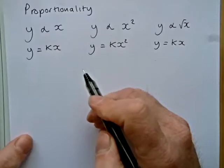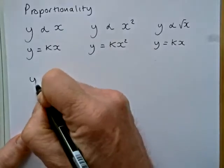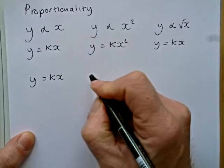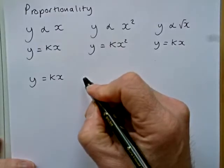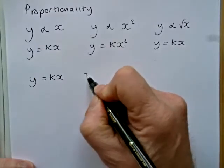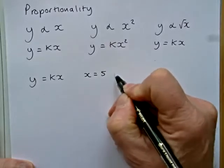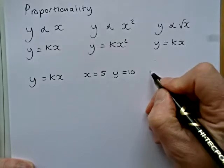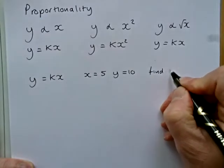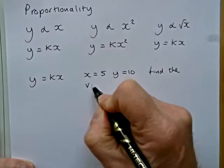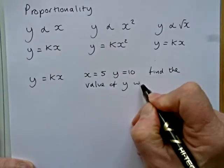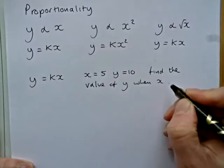The second part of these questions, so let's take y equals kx, would be to give you some information about x and y. So it might say to you that when x equals 5, y equals 10. And then it might say find the value of y when x equals another value, say 7.